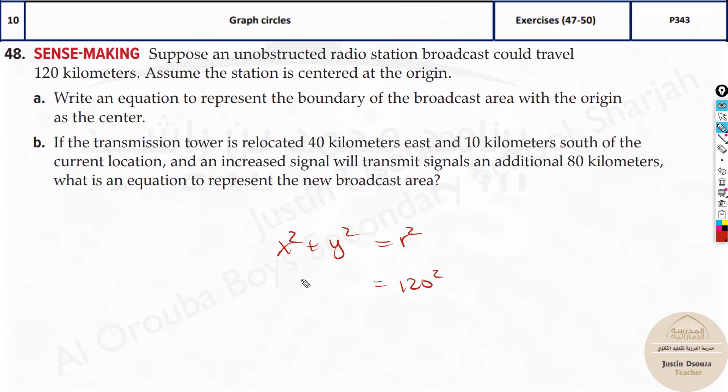Now, if the transmission tower is relocated 40 kilometers east, because they have mentioned the directions, we have to know which is north, south, east and west. Above is always north. Down is south. Right is east and left is west. So 40 kilometers east, it's going over here, and 10 kilometers south. Current was origin, right?